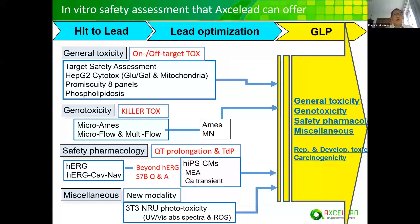This slide shows our safety assessment capabilities, classified in the following four fields. The first is general toxicity — that is on- and off-target toxicity, mainly organ tox. General toxicity is a killer tox we should avoid. Safety pharmacology covers mainly QT prolongation risk and arrhythmogenic potential. As miscellaneous, not only phototoxicity but also specific toxicity for new modalities.